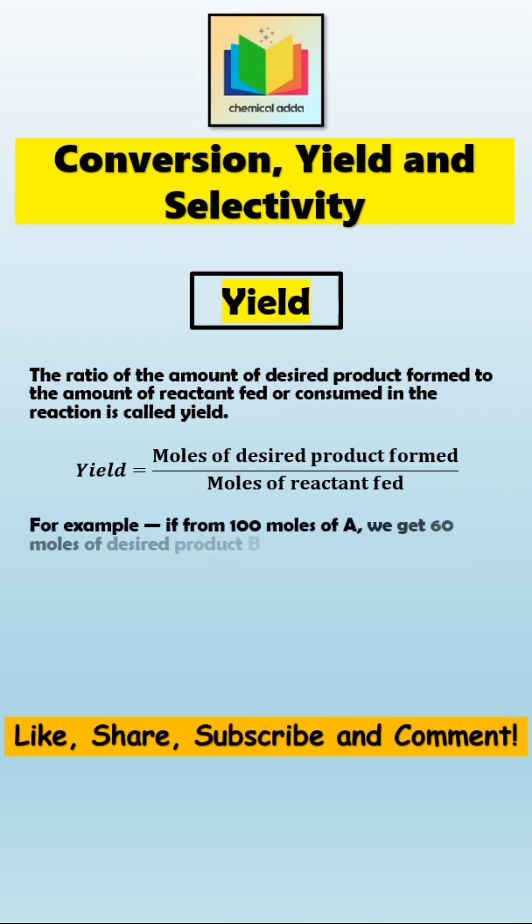So if from 100 moles of A we get 60 moles of desired product B, then yield can be calculated as 60 divided by 100, which is equal to 0.6 or 60%.